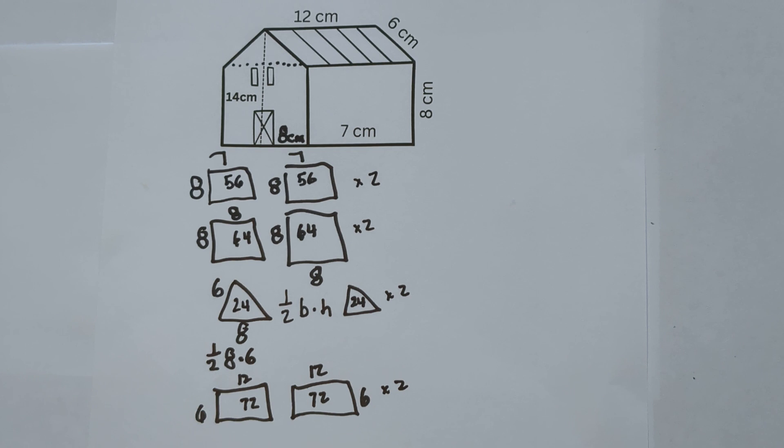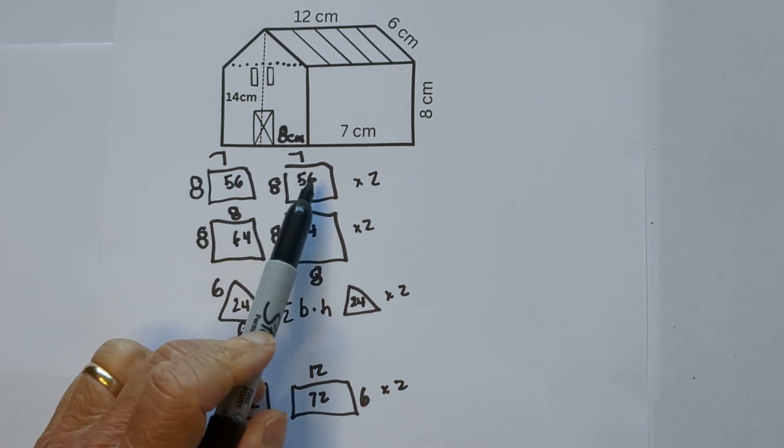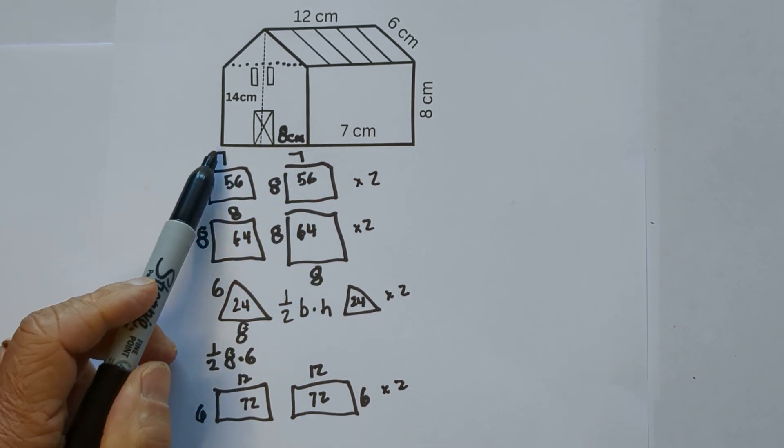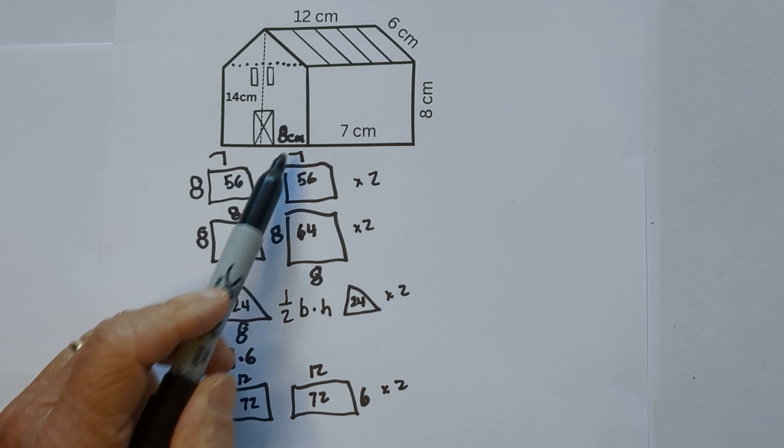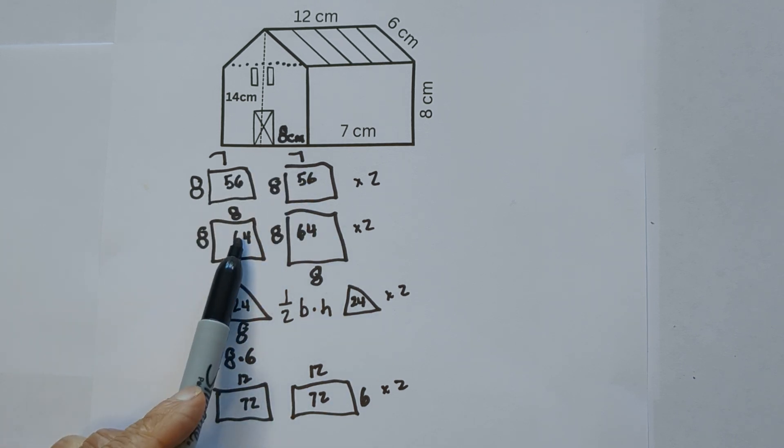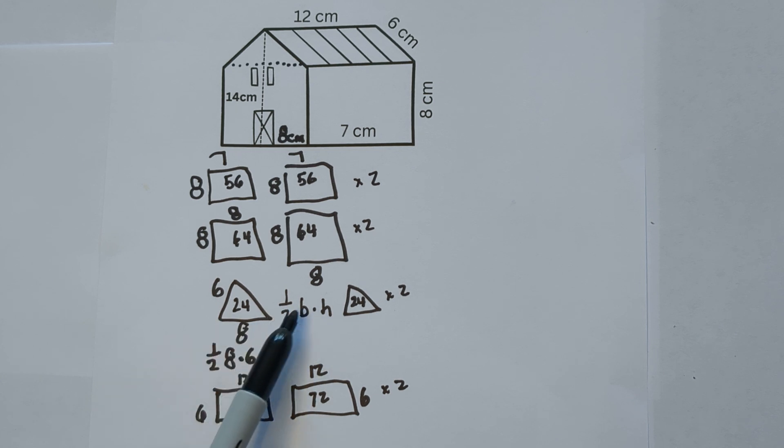Okay, to speed things up just a little bit, I went ahead and wrote in... if we multiply 8 times 7, that's going to be 56. These are going to be 64. One-half base times height was ½ times 8 times 6, so it's basically 8 times 6 and half of that is 24.